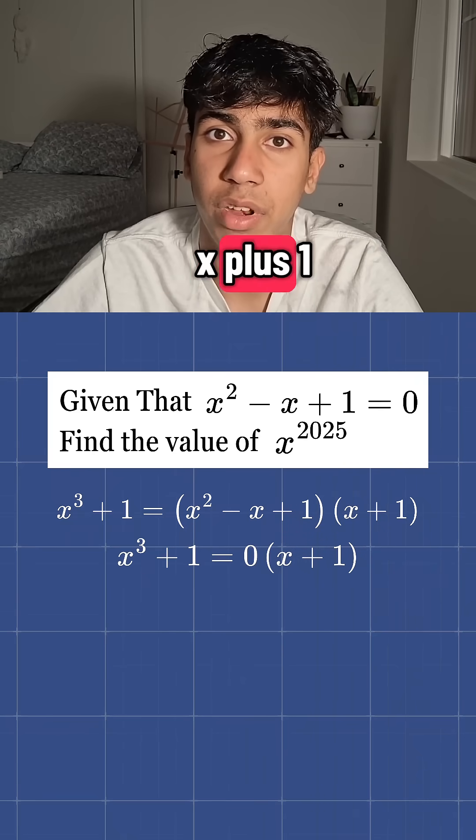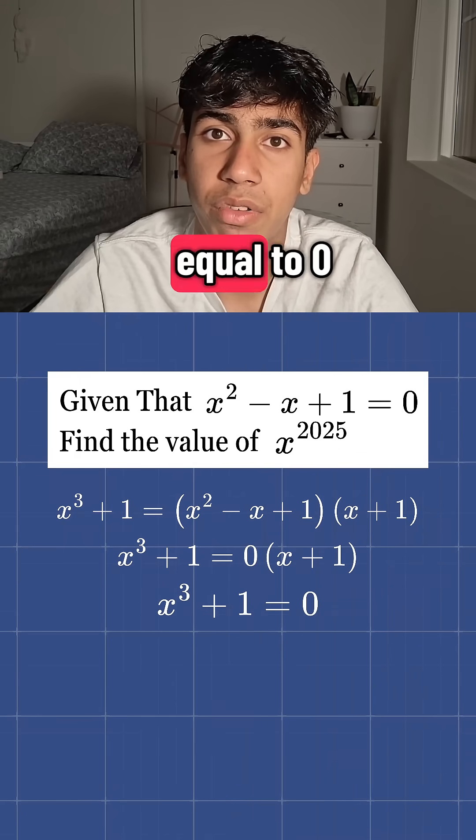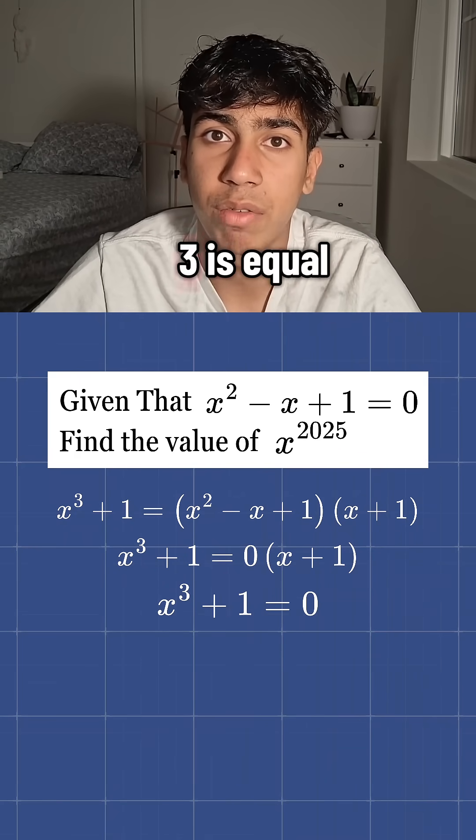Since we know x squared minus x plus 1 is equal to 0, we can substitute it in. This makes x to the power of 3 plus 1 equal to 0. So x to the power of 3 is equal to negative 1.